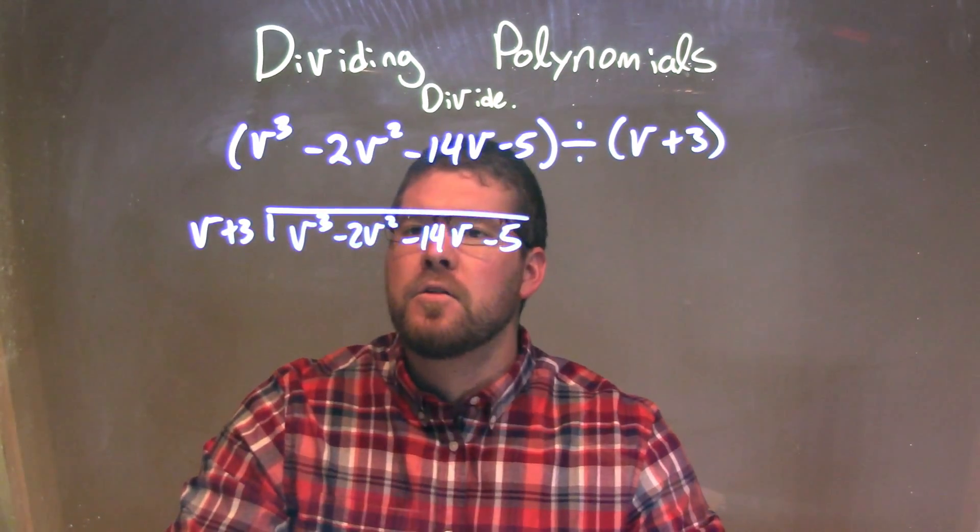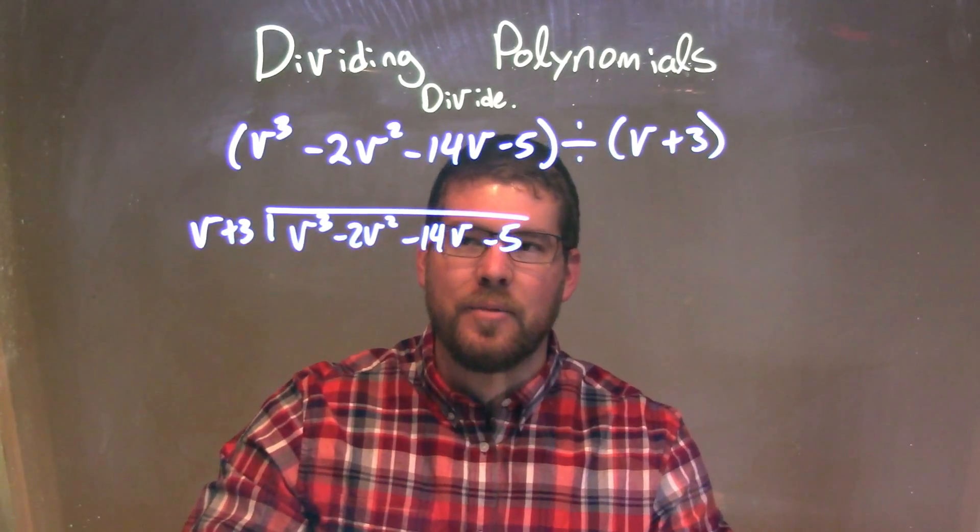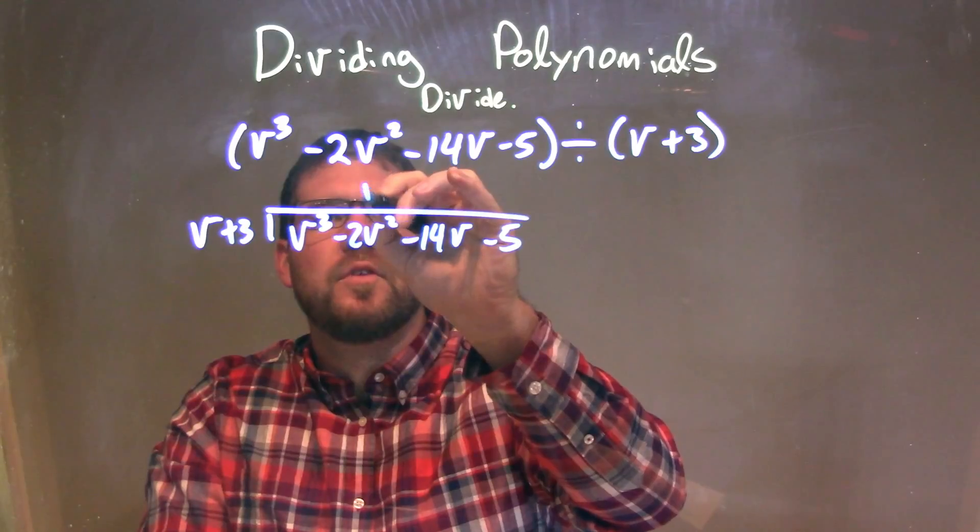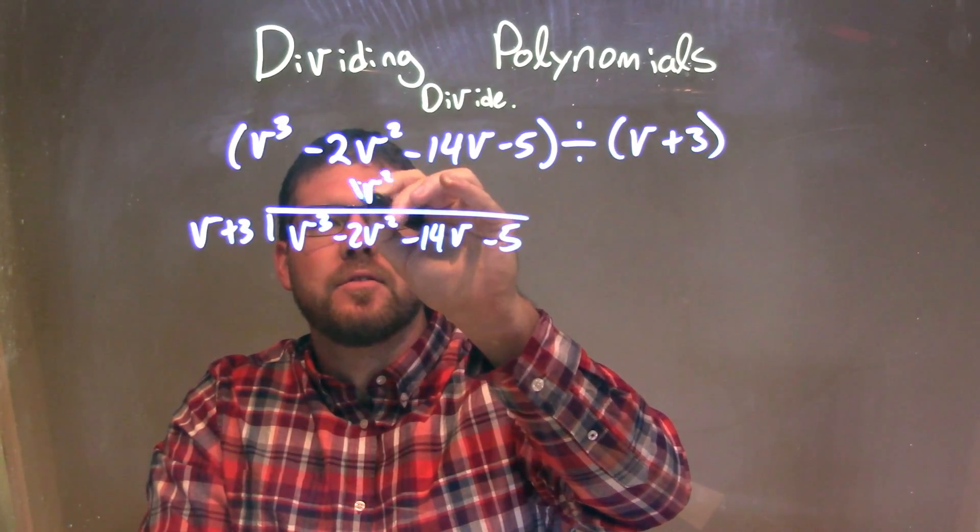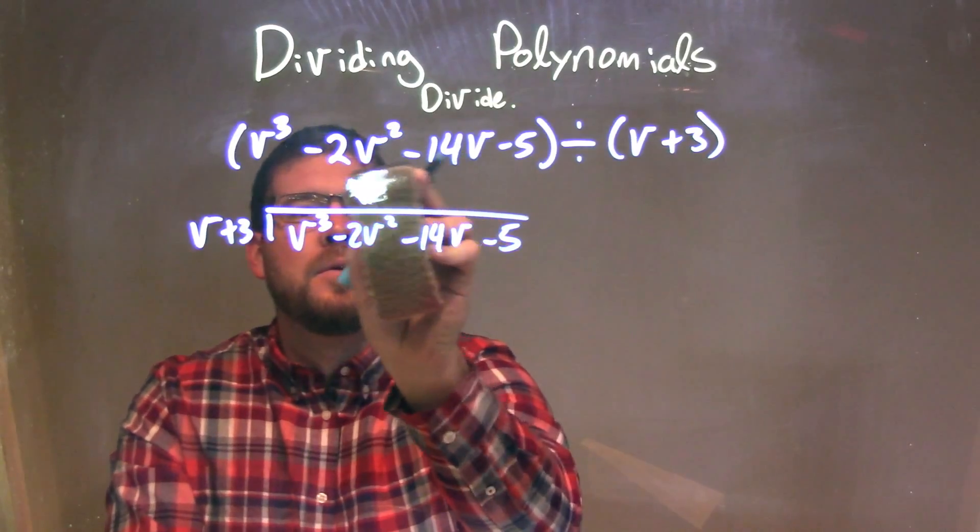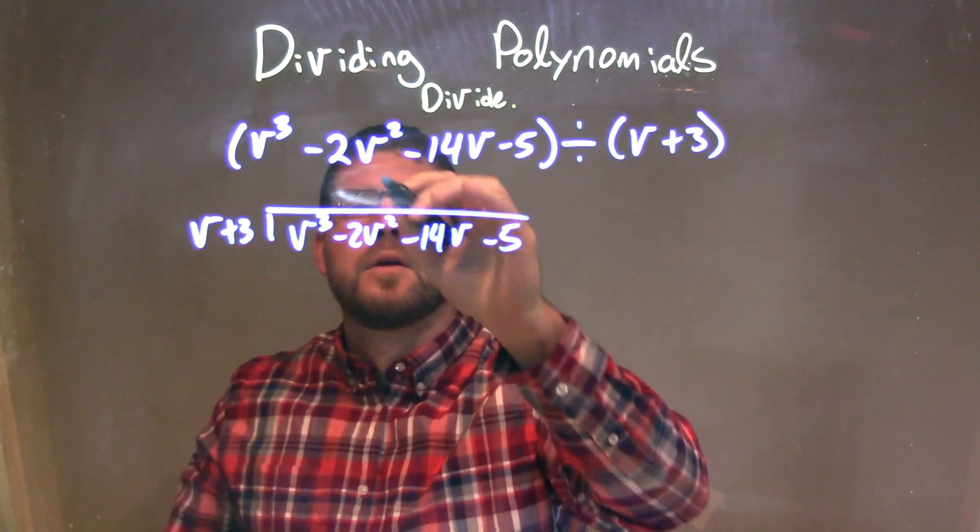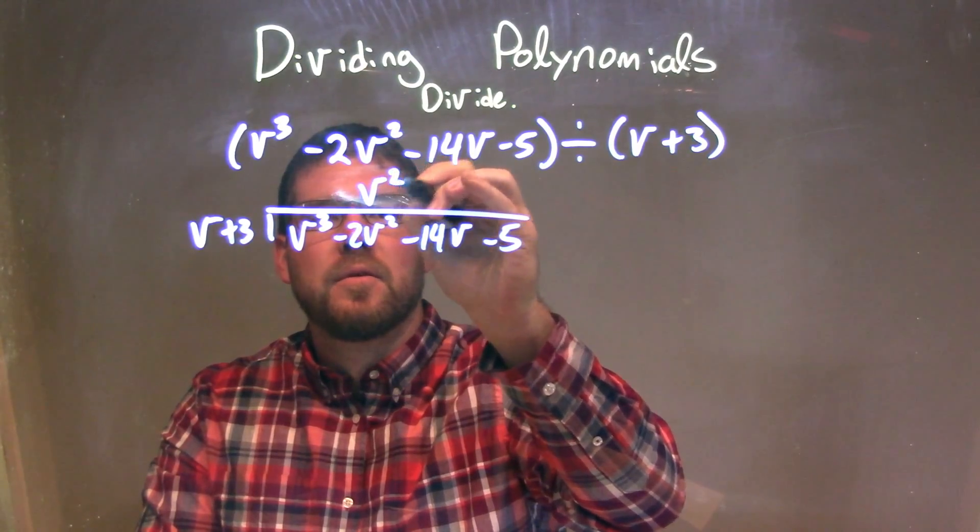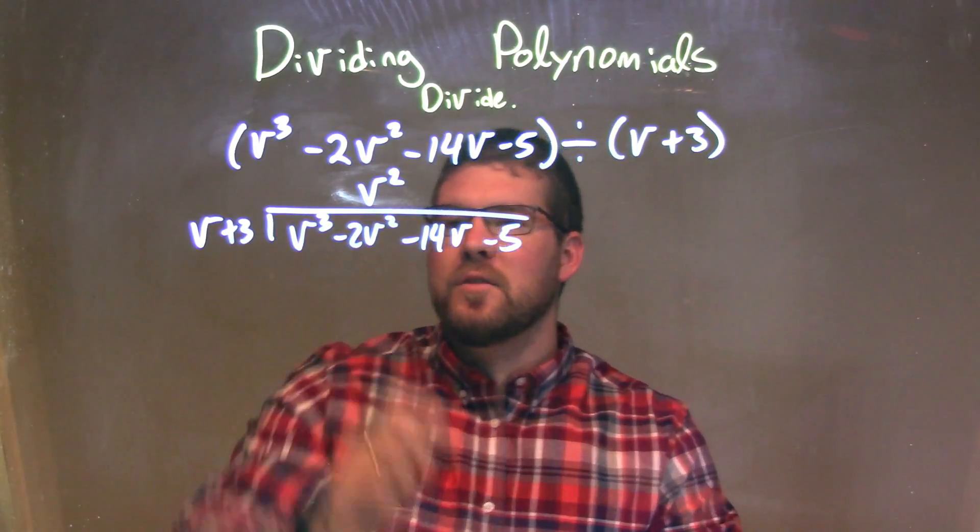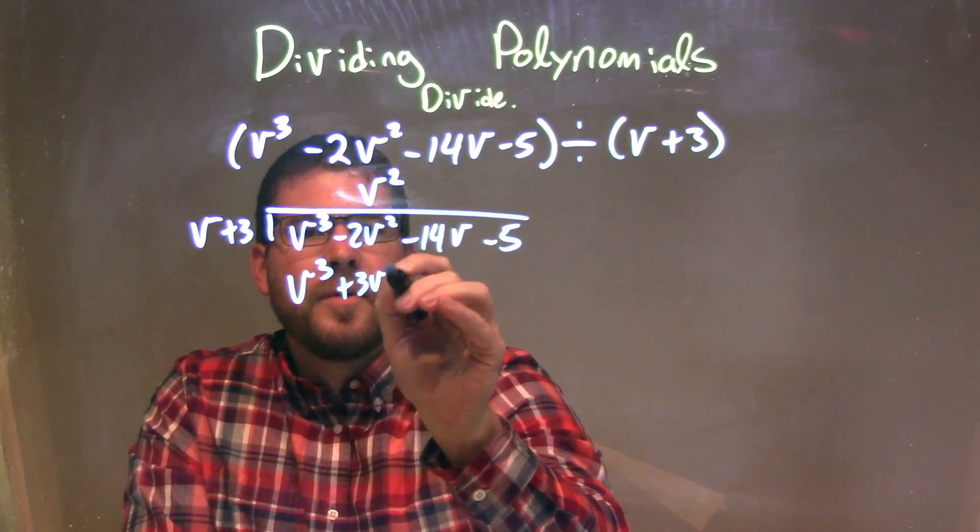Okay, so now I ask myself the question, what times v gives me v³? That's v². So v² here. Better v's... don't judge me. So we have v² here. v² times v is v³. v² times 3 is plus 3v².